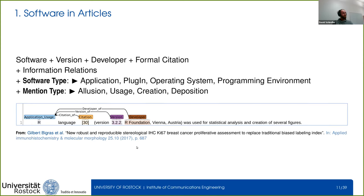Another piece of information we extract is the software type and mention type — contextual information closely describing the software mention. For software type, we distinguish between an application (a standalone software you download, install, and run), plugins (software not intended to run on its own but in combination with another software), operating systems (specialized software to manage computer hardware and processes), and programming environments used to create and execute new software.